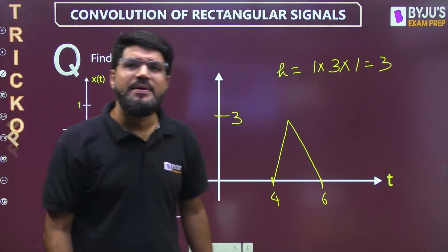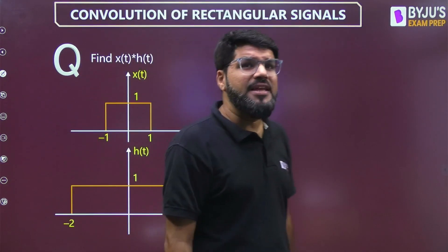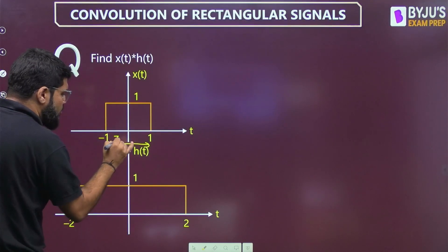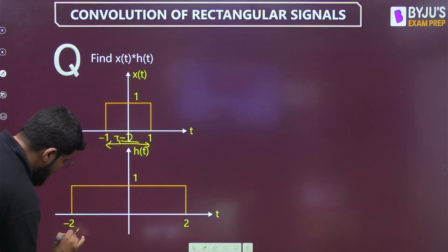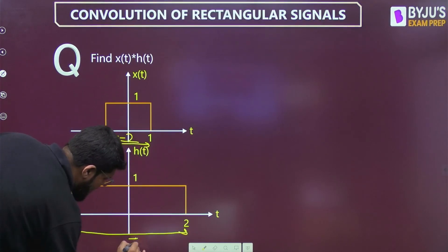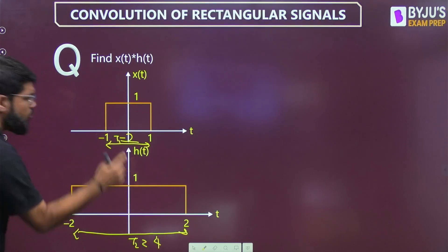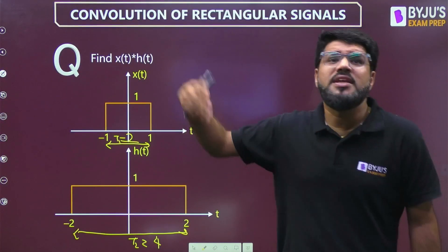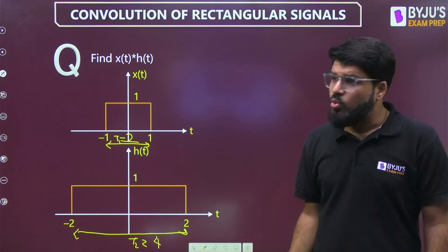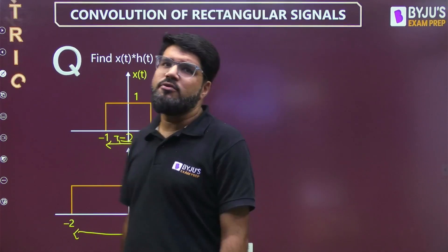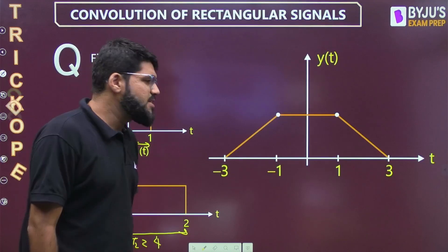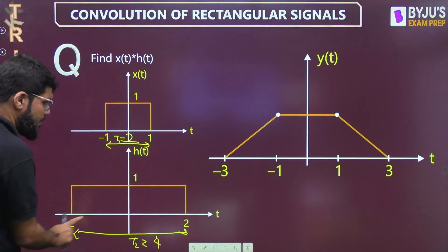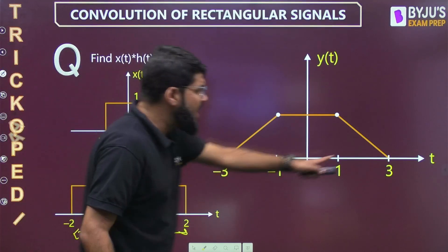For unequal duration rectangles, have a look at this example. One rectangle has duration T1 = 2, the other has duration T2 = 4 (from minus 2, so duration 4). Unequal durations, so the result will be a trapezoid. The starting point is minus 1 + minus 2 = minus 3, and the ending point is 1 + 2 = 3. These are the outer endpoints of the trapezoid.